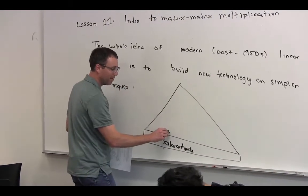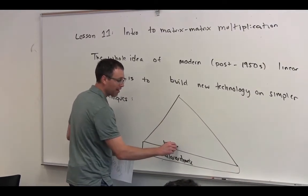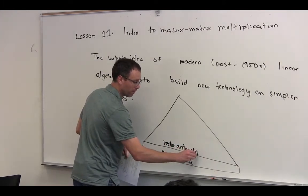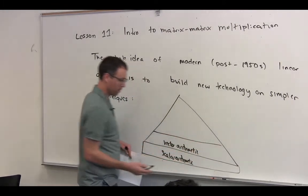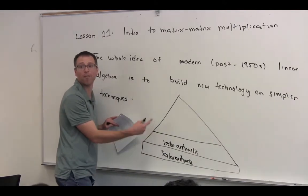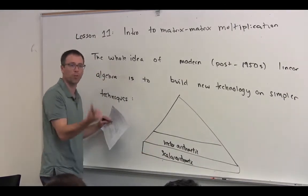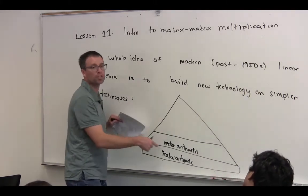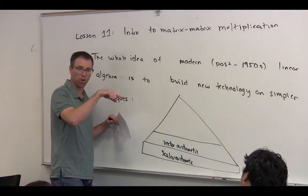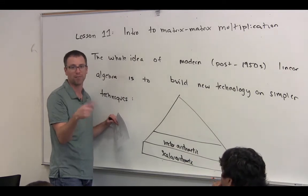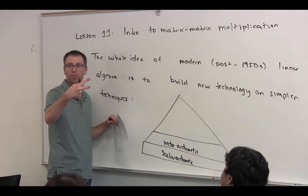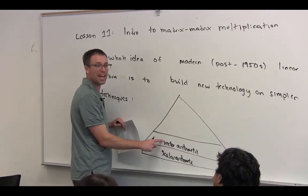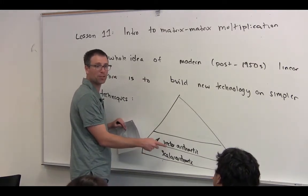And then above that we had vector arithmetic, which meant that we had scalar-vector and vector-vector. So scalar arithmetic was multiplication of scalars and addition of scalars. And of course, subtraction is just scalar multiple with a negative and an addition, and division is multiplication by the inverse. Vector arithmetic was scalar-vector multiplication and vector-vector addition.